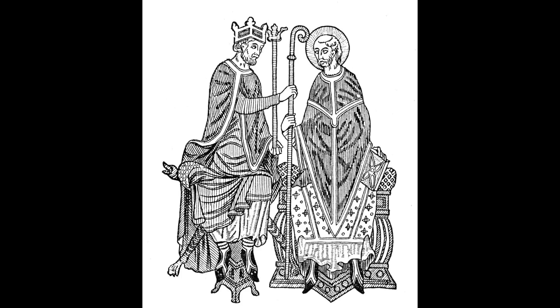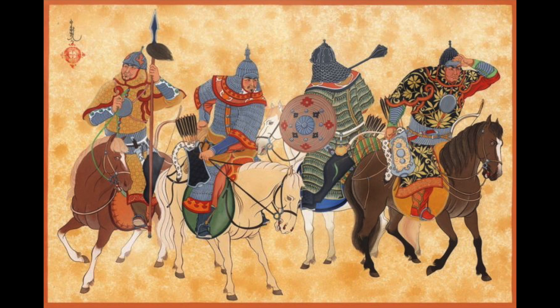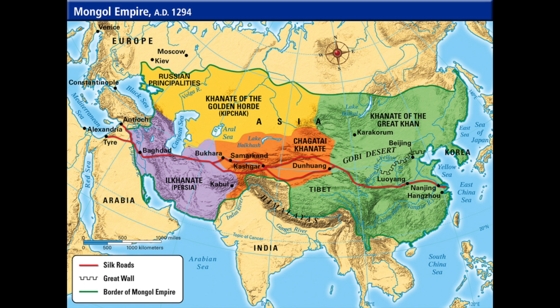In the next period, not only do we see different types of government, but also different types of management such as feudalism and the Mandate of Heaven. Religious beliefs also conflicted with political management — for example, the Papal-Imperial Struggle, where the Holy Roman Empire could not decide whether the Pope or the Emperor held true power. The Crusades of Europe against the Middle East to regain power from Islamic rule also fit here. The Mongols, under the management of Genghis Khan, conquered most of Asia. After Genghis Khan died, the Mongol Empire was split into smaller khanates managed by his grandsons.